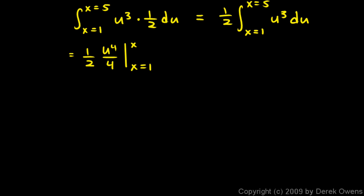This is going to equal 1 half times u to the fourth over 4, and that's evaluated from 1 to 5. But let's write x equals 1 to x equals 5, and that's important to note that the limits here, 1 and 5, are in terms of x, not in terms of u, because our function is still in terms of u. We can't plug in x equals 5 and x equals 1 here, because that's not an x. So we have to substitute back in for u right there.